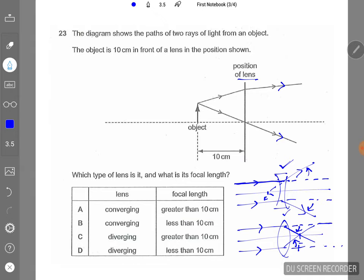Well, for a diverging lens, the rays will actually open up. So for this case, let's take a focus on this ray here. This is the original path of the light if there's no lens.